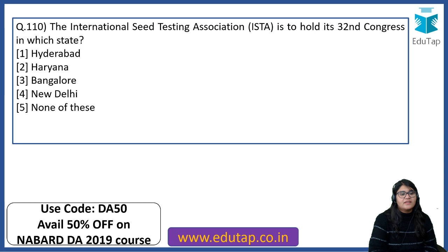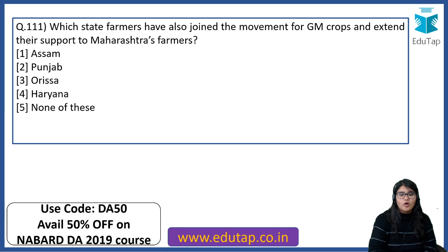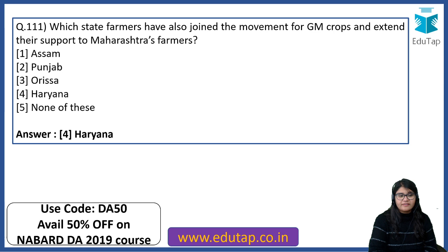The International Seed Testing Association is to hold its 32nd Congress in which state? The answer is Hyderabad. Which state's farmers have joined the movement for genetically modified crops to extend support to Maharashtra's farmers? The answer is Haryana, wherein farmers are protesting saying they have the right to cultivate GM crops.